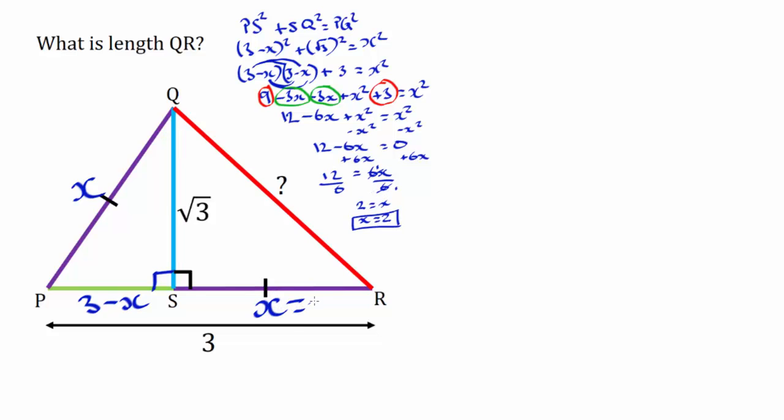So we have X is equal to 2. X is equal to 2 and if you look at the triangle SQR, it's another right angle triangle. SQR. Now we know that SR is 2 and we already knew that SQ is root 3. So we can use Pythagoras again.